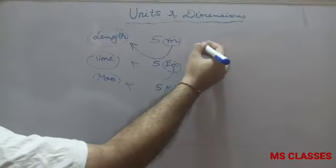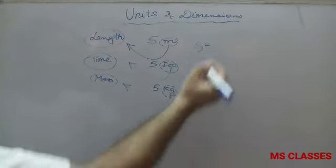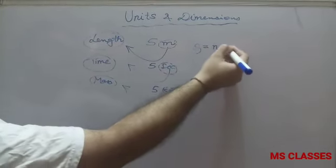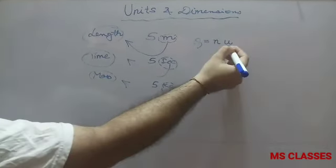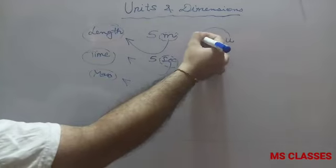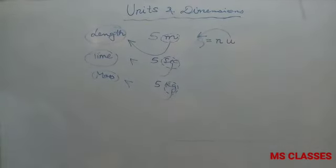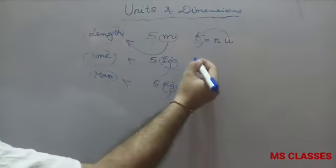We can write this as Q = N × U, where Q is the physical quantity, N is the numerical value, and U is the unit. So that unit is something which gives us an idea about the physical quantity Q.